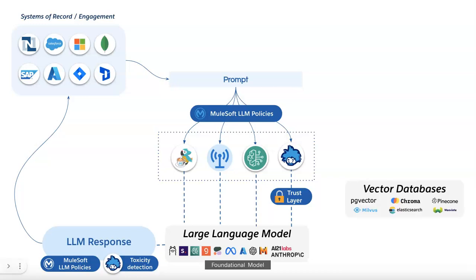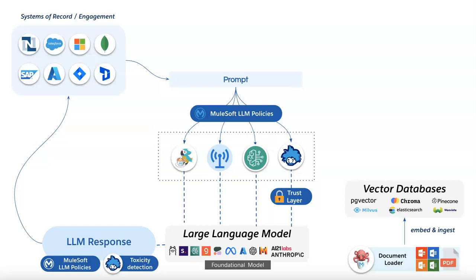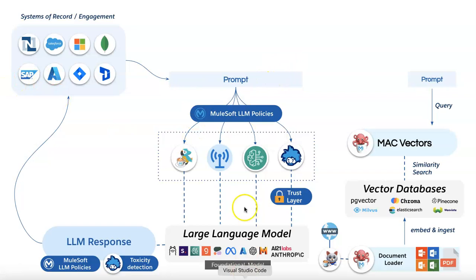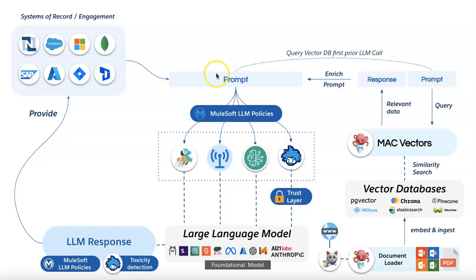We have already built our agent with LLM integration and connected governance around it — managing tokens, enabling toxicity detection, and doing prompt decoration. Now let's look at knowledge: how do we build knowledge? For knowledge, you need vector databases. You take unstructured data and ingest it into your VectorDB to build that knowledge. Instead of sending the query directly to the LLM, you first send it to the VectorDB, retrieve only relevant data, enrich the prompt with it, and then get a more contextual answer.